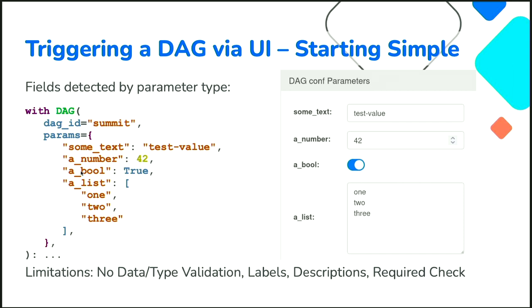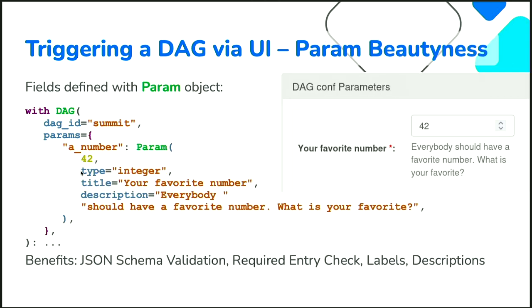In this autoboxing, supported types are text, integer, boolean, and list. List types are rendered as a text box so you can copy and paste a long list without manually entering many elements. Limitations are that if we autobox the value, there's no type validation, no label, no description, no rich user support. But it's the entry point — a structured params definition that is better than the old unstructured DAG run conf where you don't know what the user enters. At least with params, you know what you get.